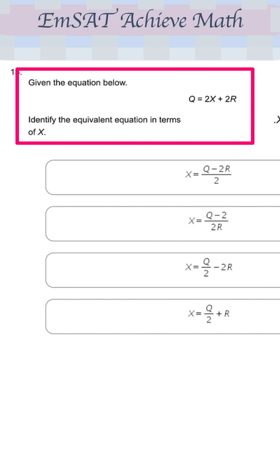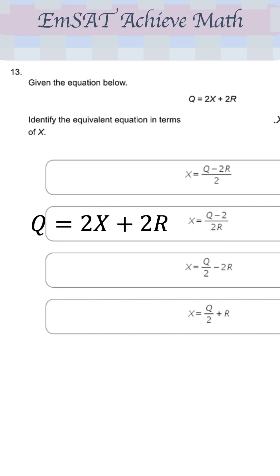Given the equation below, Q equals 2X plus 2R, identify the equivalent equation in terms of X. Here they want you to find X equal to what? Now we write it Q equals 2X plus 2R.